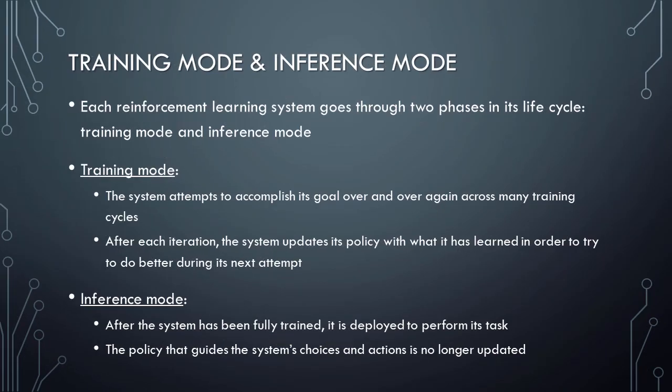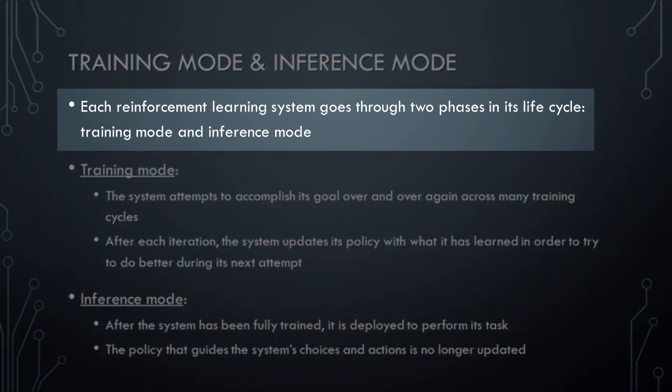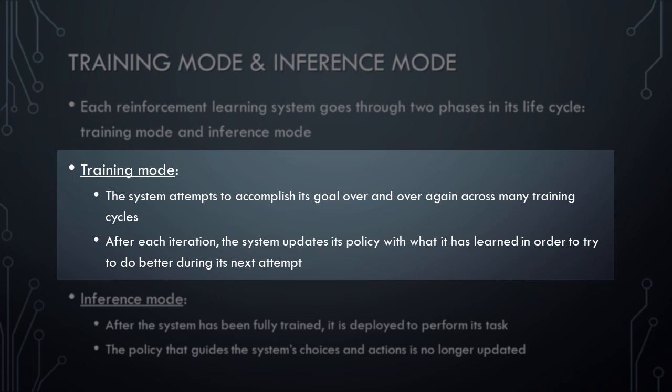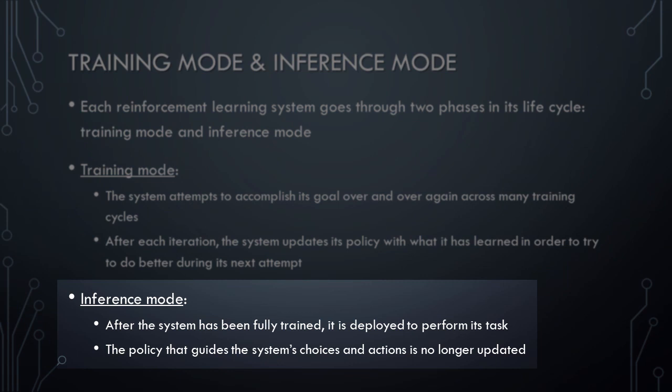The last principle of reinforcement learning systems that we need to discuss is the difference between training mode and inference mode. Each reinforcement learning system goes through two phases in its life cycle: training mode and inference mode. In training mode, the system is learning and is attempting to identify an optimal policy to guide its choices and actions. During this time, the system attempts to accomplish its goal over and over again across many training cycles — sometimes hundreds of thousands or even millions of training cycles. After each iteration, the system updates its policy with what it most recently learned in order to try to do better during its next attempt. In inference mode, the system has been fully trained and is deployed to perform its task. When in this mode, the policy that guides the system's choices and actions is no longer updated. Instead, it simply uses the learned policy to make decisions about what to do given the current state of the environment.